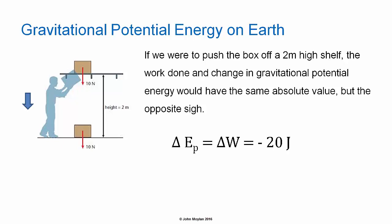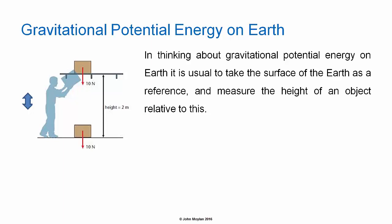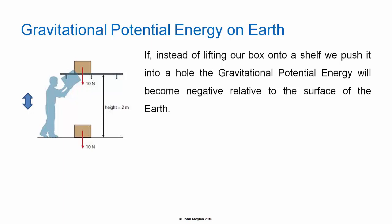The change in Gravitational Potential Energy would still be equal to the work done on the box, but in this case would be equal to minus 20 joules. Gravitational Potential Energy on Earth is usually defined in reference to the surface of the Earth, meaning that an object resting on the surface of the Earth is defined as having zero height and zero Gravitational Potential Energy. If we were to push the box into a hole rather than lifting it onto a shelf, the Gravitational Potential Energy of the box relative to the surface of the Earth would become negative, and negative work would also be done on the box.